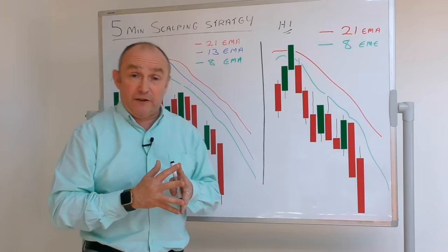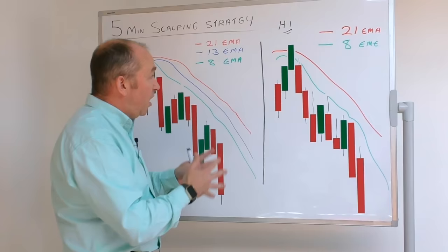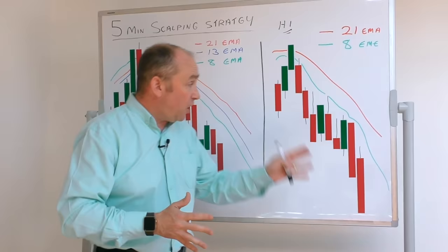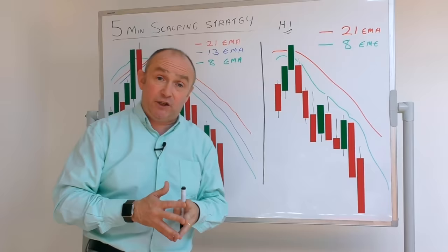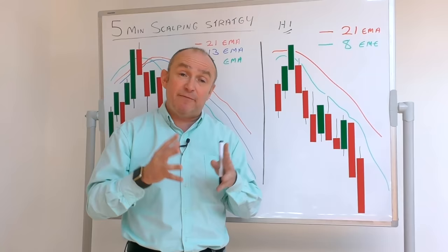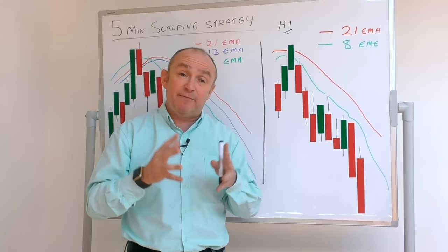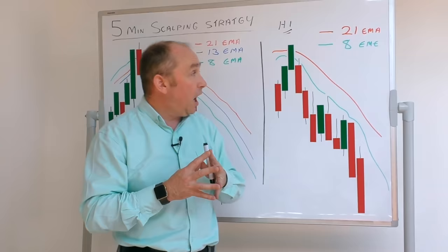As with any strategy I trade, I always look for the higher timeframe confirmation. In this example, if we're trading the five-minute chart, we have our confirmation chart — I call it the anchor chart. The anchor chart for this five-minute strategy is going to be the H1 chart, the hourly or 60-minute chart. That determines which way we're going to be trading — are we going to be buying or selling? I use two exponential moving averages to give me an indication of which way the market is going.